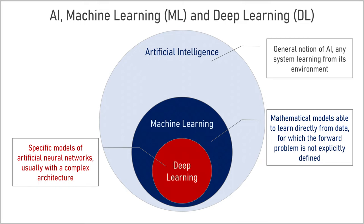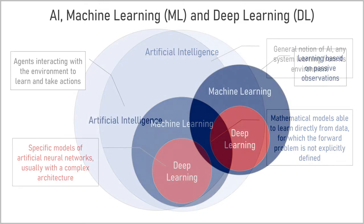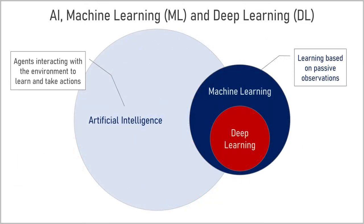Other classifications exist. In recent years, the tendency is to use the term artificial intelligence mostly for active agents interacting with their environment to learn and to take actions, for example for robotics or self-driving cars. While the term machine learning is used for learning from data based on passive observations, for example prediction of cancer prognosis from already existing data.